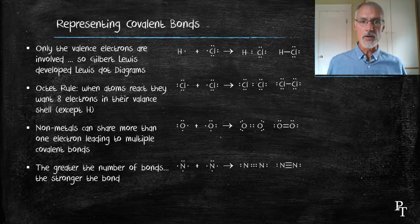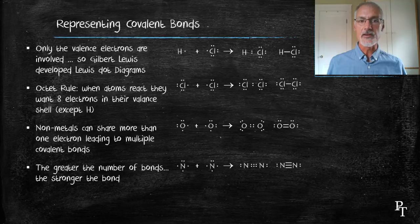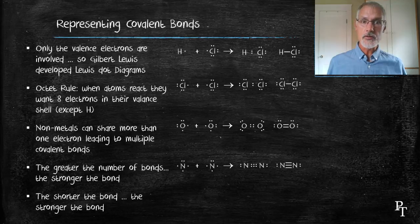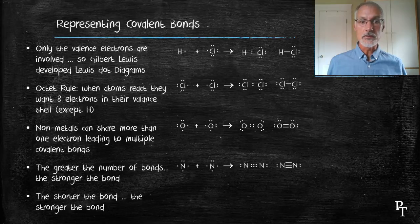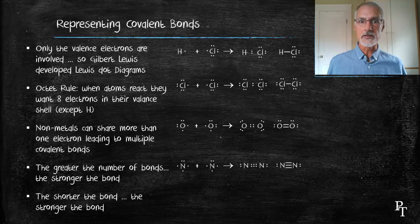The greater the number of bonds, the stronger the bonds. So we would expect the bond in nitrogen to be stronger than, say, the bond in chlorine. Also, the shorter the bond, the stronger the bond. In this case, if we were to consider chlorine with bromine, the bond between chlorines would be stronger than the bond between bromines, because chlorine is a smaller atom.